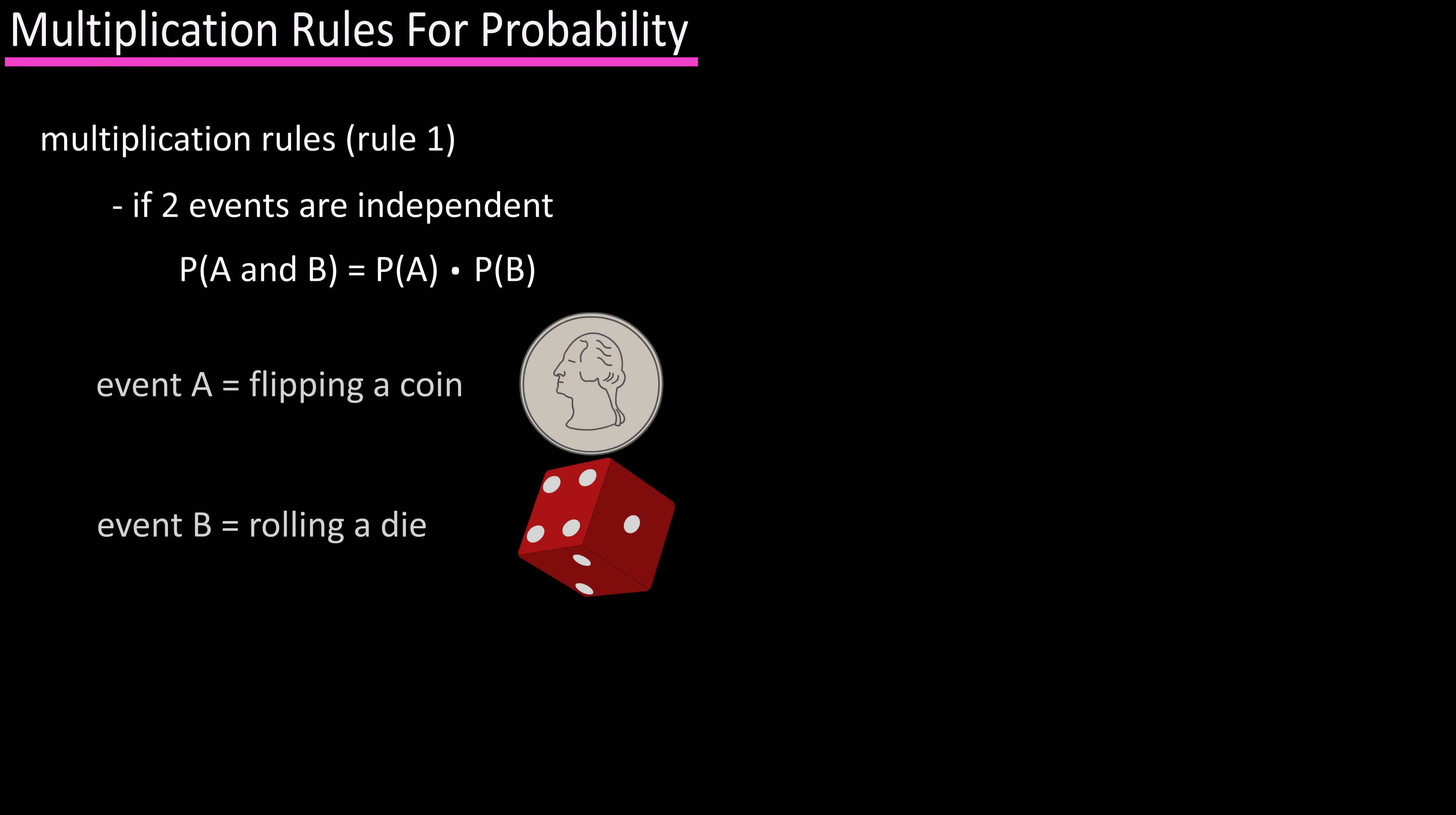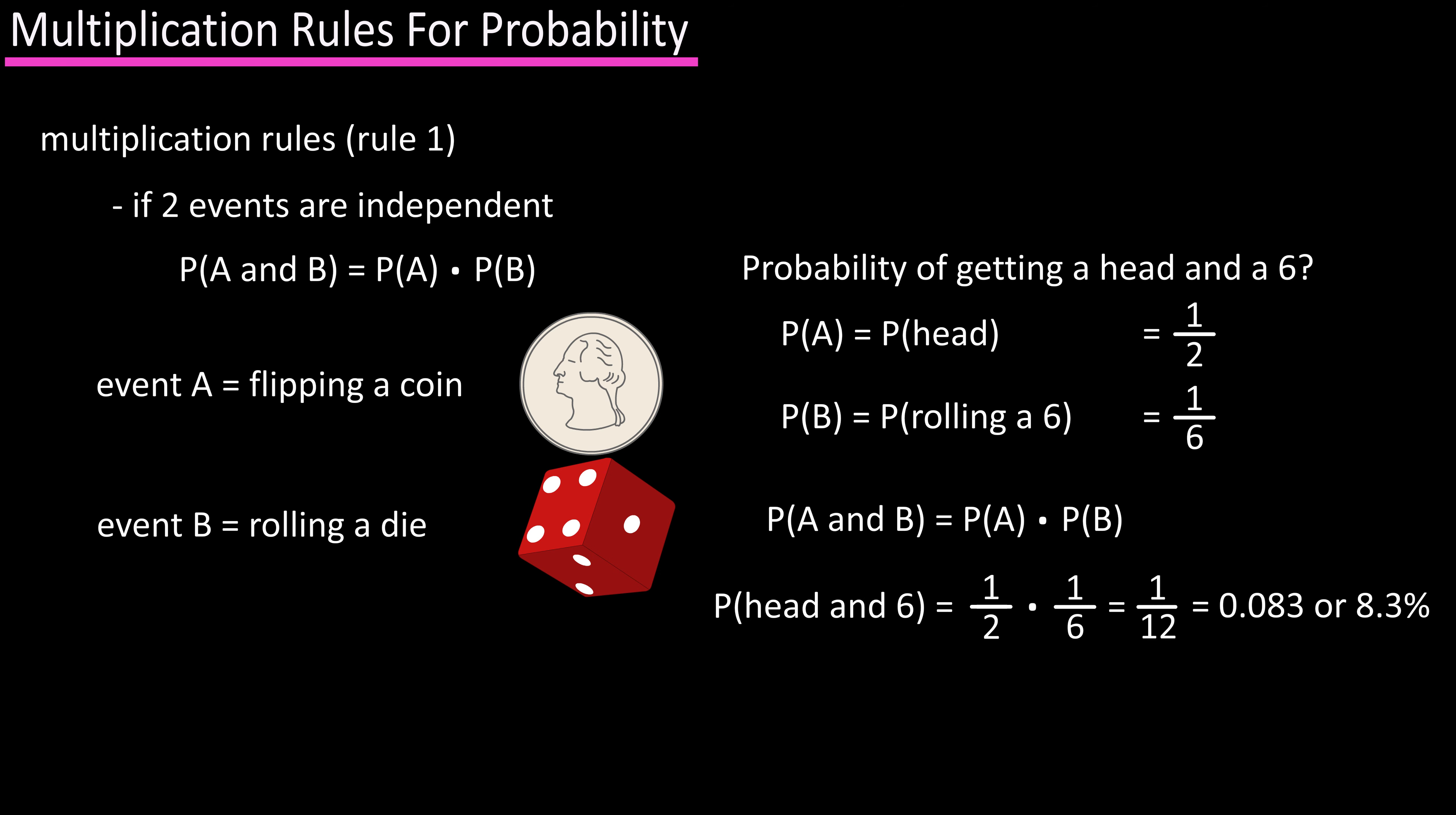So flipping a coin as event A and rolling a die as event B. And what is the probability of getting a head and a six? P(A) getting a head in the coin toss equals 1/2. And the probability of B, rolling a six, equals 1/6. Multiply them and we get 1/12, or 0.083, or 8.3% probability of this outcome.